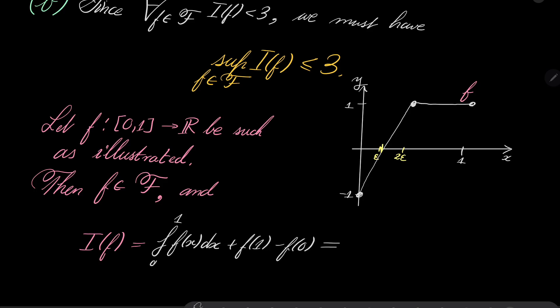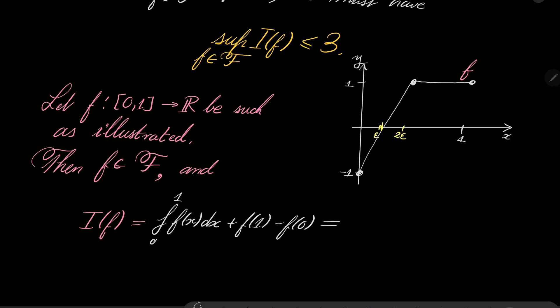I(f) is the integral from 0 to 1 of f(x) dx plus f(1) minus f(0). And let's take a look. What is integral from 0 to 1 of f(x) dx? It's just the area of that minus the area of that. But probably you can see clearly there is no need for any integral, because these two triangles marked in blue are just congruent, so their areas cancel. So this integral is just the area of this rectangle, which is 1 minus 2ε. Then we have plus f(1), but f(1) is 1, and we subtract f(0), so we subtract -1. So we get 3 minus 2ε.